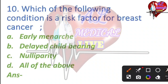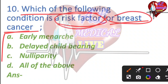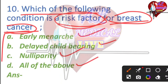Which of the following condition is a risk factor for breast cancer? The options are: A) early menarche, B) delay childbearing, C) multiparity, D) all of the above. So, what is the right answer?